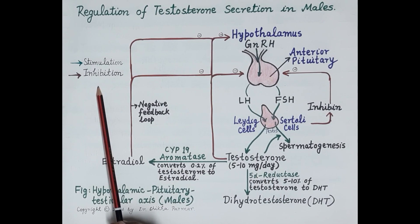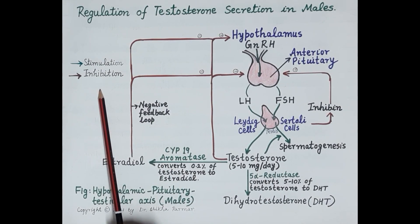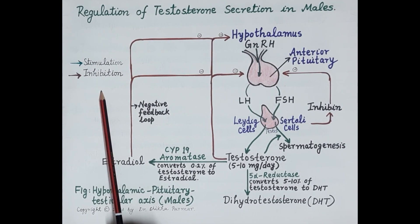Now, very importantly, stimulation and increased release of hormones is depicted by the green arrows, while inhibition and reduced release of hormones is depicted by the red arrows.